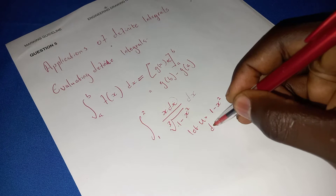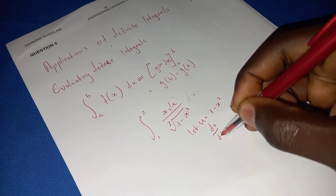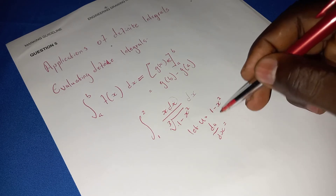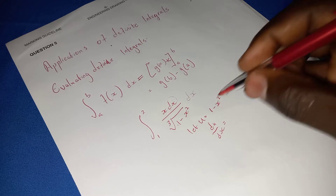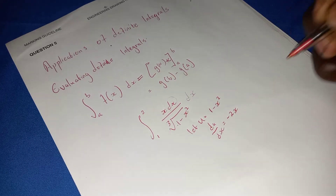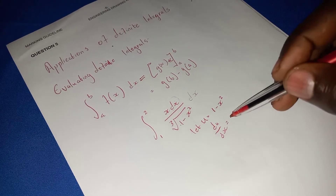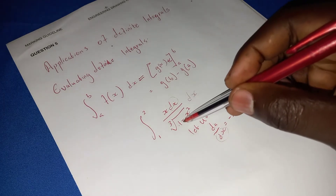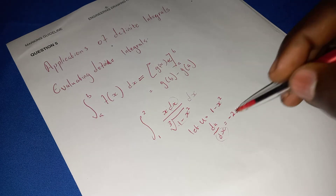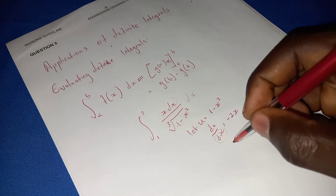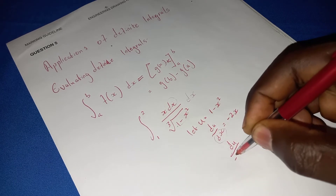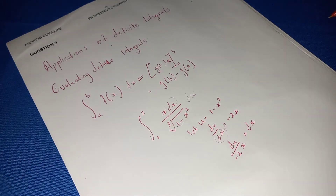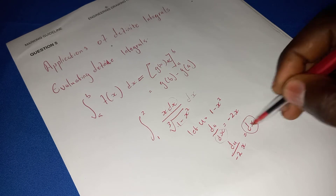You need to derive u in terms of x. The derivative of a constant is always zero, and the derivative of x squared gives minus 2x. So du/dx = -2x. Making dx the subject of the formula, you get dx = du over minus 2x.